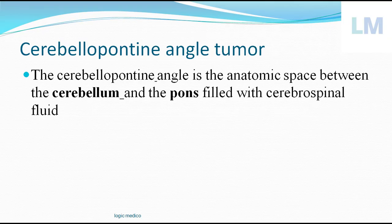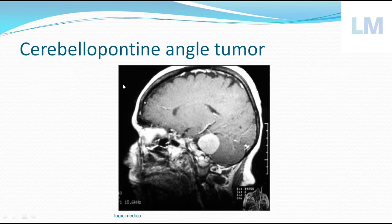Cerebellopontine Angle Tumor. It is an anatomical space — the angle between the cerebellum and pons filled with cerebrospinal fluid. Here is the cerebellum, a small brain below the cerebrum. In the posterior cranial fossa sits the cerebellum, and the brainstem has three parts: midbrain, pons, and medulla oblongata. Between the pons and cerebellum there is an angle called the cerebellopontine angle, and the tumor arising from this area is called the cerebellopontine angle tumor.